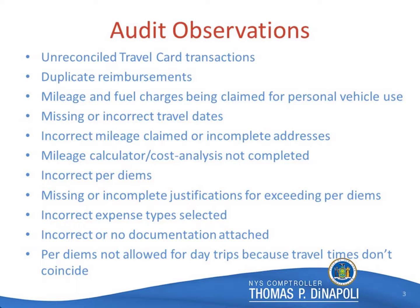Another issue is incorrect or missing documentation attached. Examples of documentation that must always accompany an expense report include receipts for all travel card transactions, as well as any claims for reimbursement, and documented prior approvals for certain expenses that do not adhere to the state's travel rules and regulations, such as when a traveler exceeds the maximum lodging per diem rates.